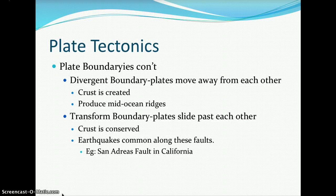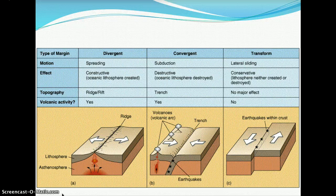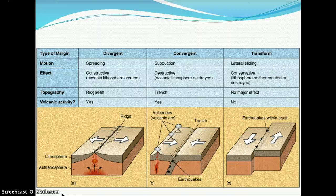Here you can see the three types of plate boundaries summarized. At a divergent boundary, the motion is spreading — the effect is constructive, oceanic lithosphere is created, and the topography of the ocean floor features a ridge or rift, forming mountain ranges and valleys, with volcanic activity present.